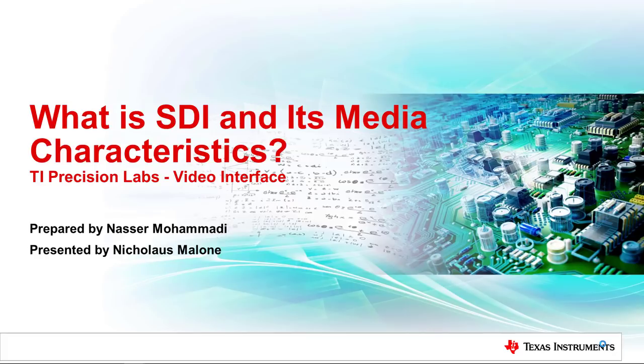In this first session we're going to discuss elements involved in the SDI signal path and the effects of its transmission media, 75 ohm coax, and its characteristics. Then we will discuss how SDI data coding and framing helps improve the performance of SDI components.